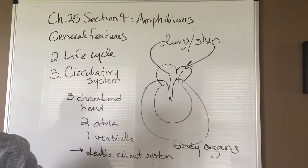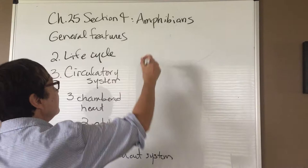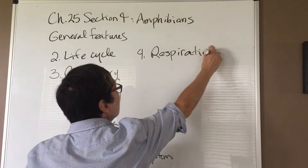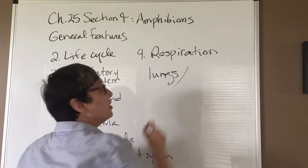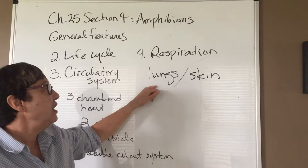The fourth characteristic is respiration. Amphibians tend to use a combination of organs: the skin — called cutaneous respiration — serves as a respiratory organ, along with the presence of small lungs in the body.